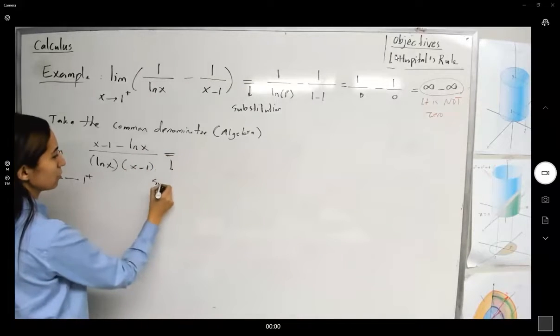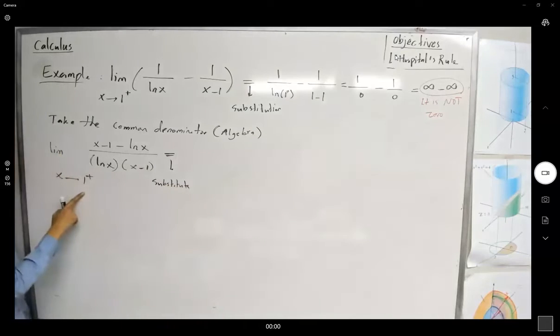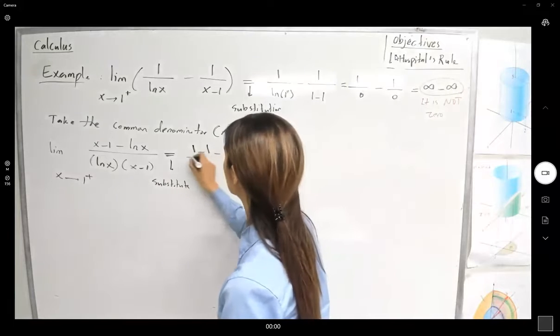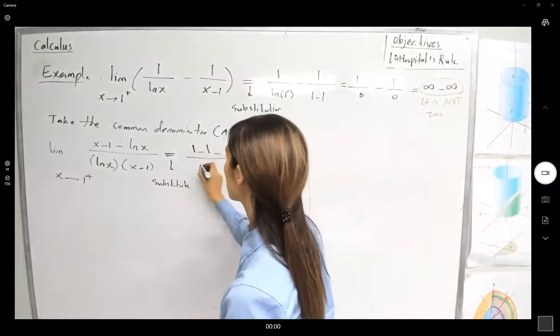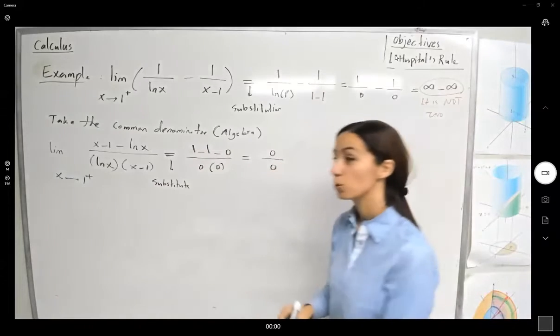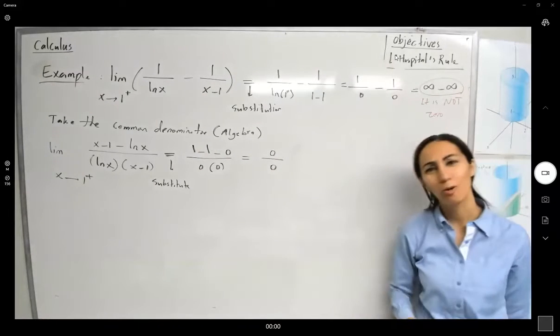Now we have to do the substitution. So let us substitute. If you start substituting 1, what do you get? You get 1 minus 1 minus 0 divided by 0 times 0. So you get 0 over 0, which is indeterminate form, and you can apply L'Hopital's rule.